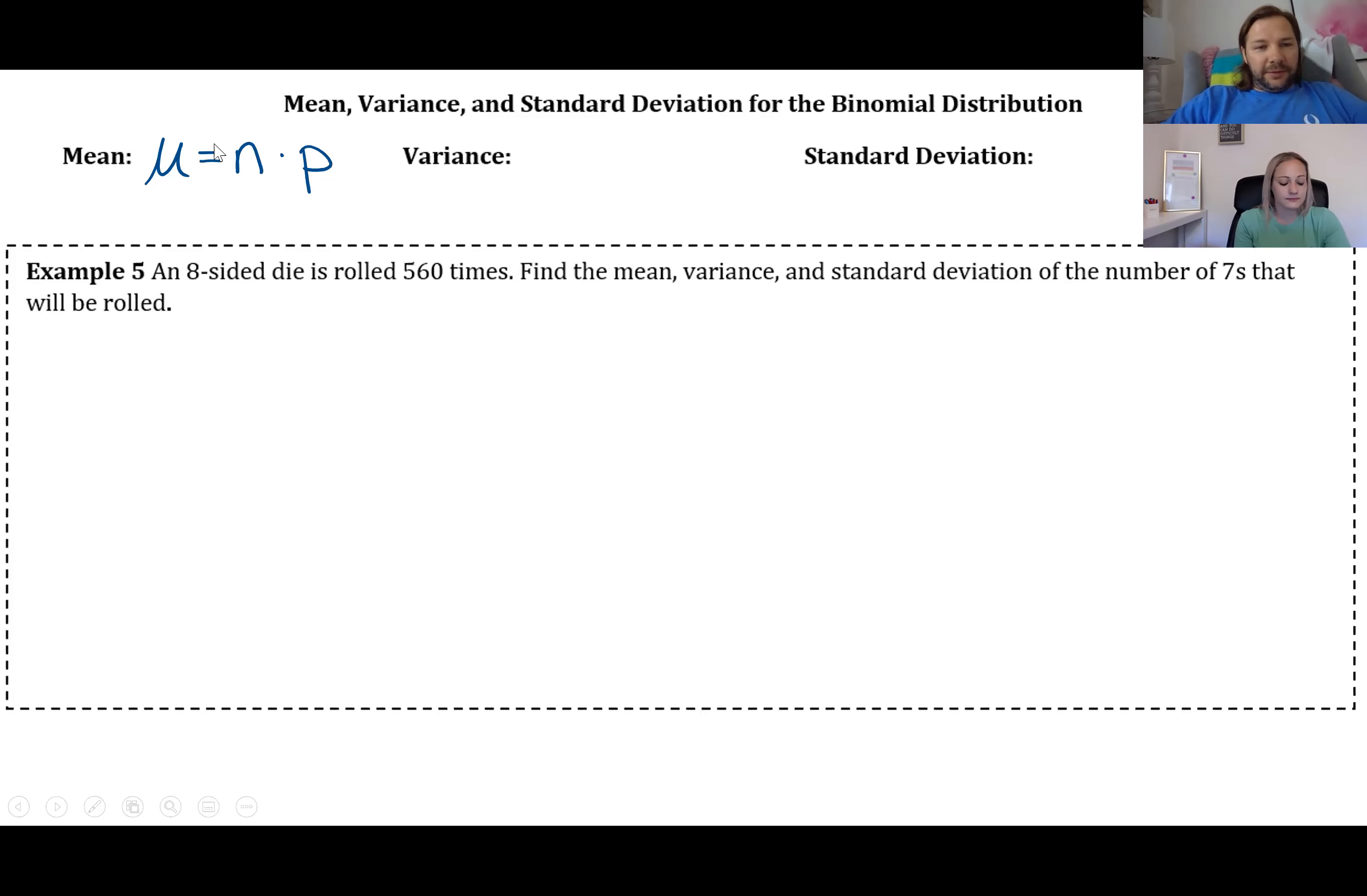So that's the number of participants in your trial, the number of times you're running the experiment, times the probability of a positive. And then the variance is going to be sigma squared, that's n times p times q. So again, p is the probability of a success, q is the probability of a failure in any given trial.